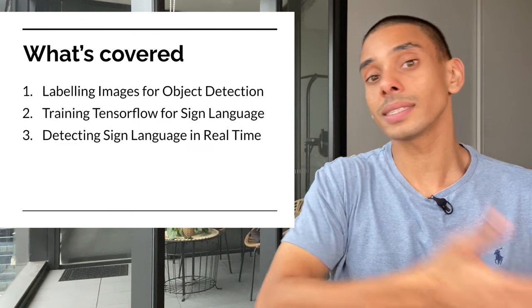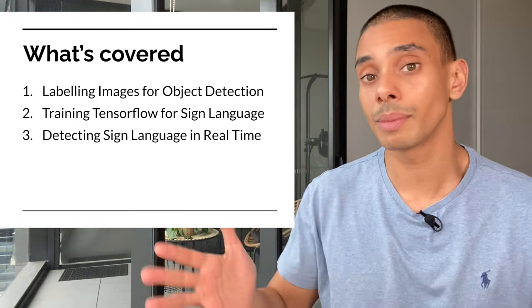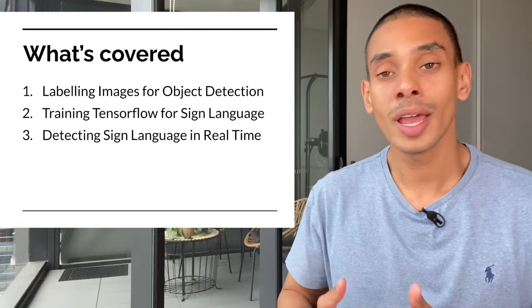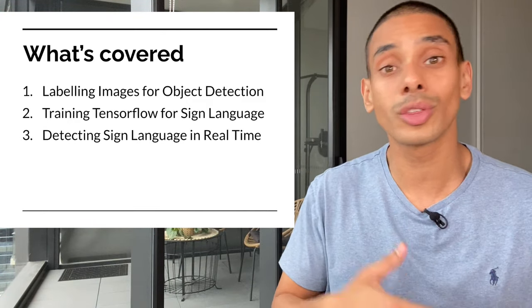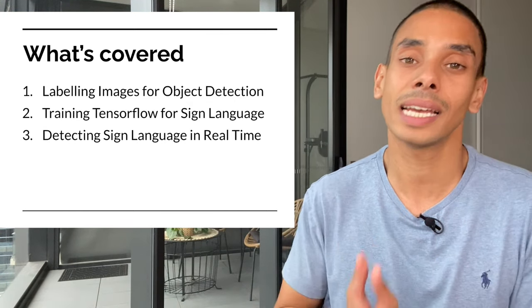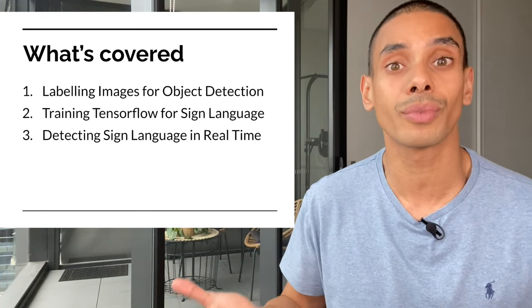My name is Nicholas Renot and in this video we're going to be building our very own sign language detector using the TensorFlow Object Detection API and Python. We're going to go from start to finish: first collecting images using Python and OpenCV, then labeling them using the LabelImage package, then building a sign language detector using transfer learning and the TensorFlow Object Detection API.